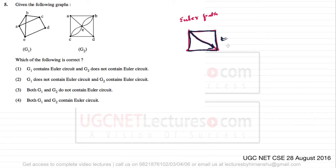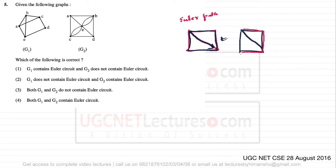When we say Euler cycle or Euler circuit, it means that you have to come back to the starting location itself. For the same graph, if we start from these vertices, there exists an Euler path but there does not exist an Euler cycle, because you have to come back to the starting vertex without visiting any edge more than once.